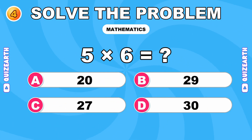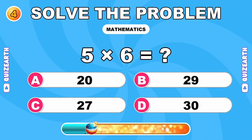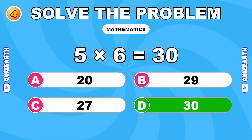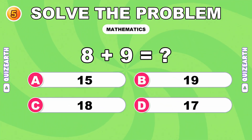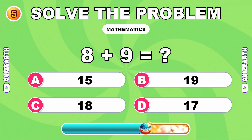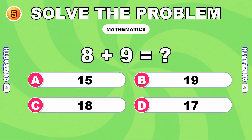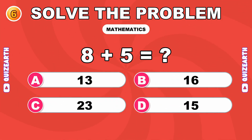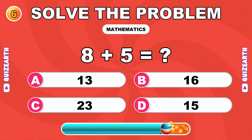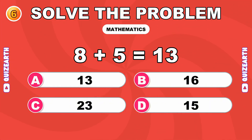What happens when you multiply 5 by 6? Looking sharp. The answer is 30. What is 8 plus 9? Crushing it. The answer is 17. What do you get when you add 8 and 5? Fantastic. The answer is 13.